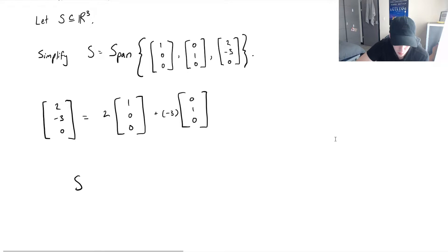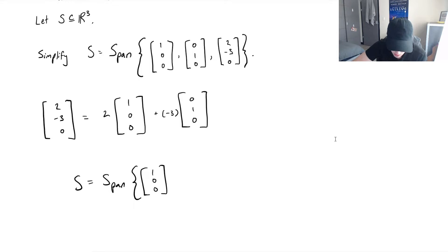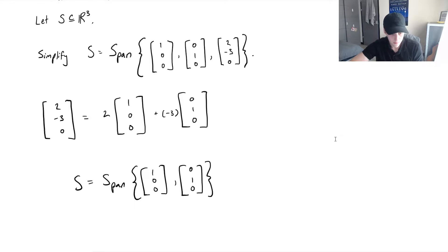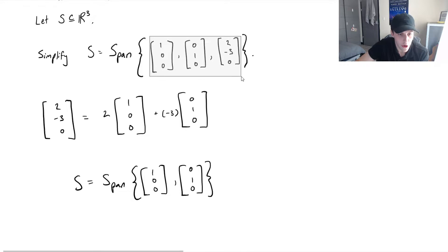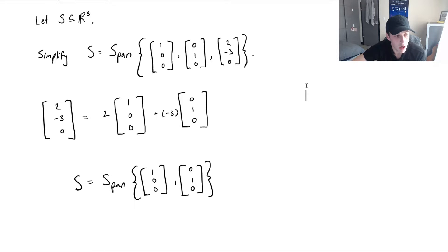So now S would be equal to the span of (1, 0, 0) and (0, 1, 0). This is the same thing as what we started with. To recap: those three vectors from the first span are not linearly independent because one of the vectors can be written as a linear combination of the other vectors. Those three vectors are a linearly dependent set because (2, -3, 0) is written as a linear combination of the other two.